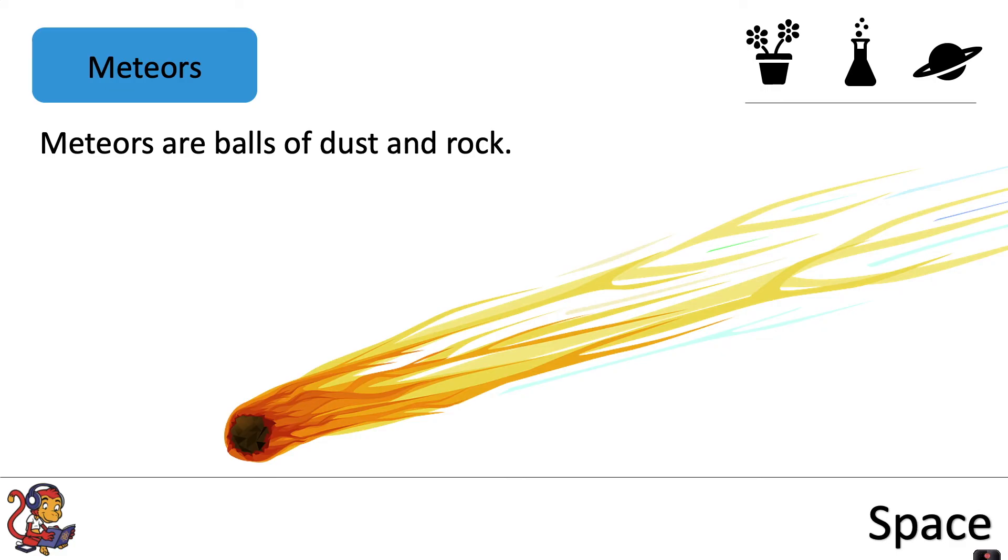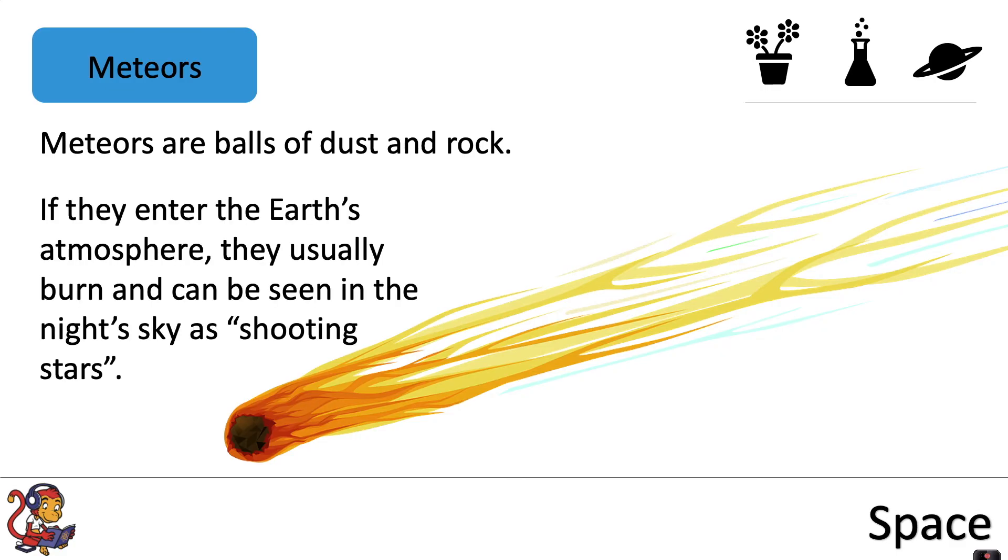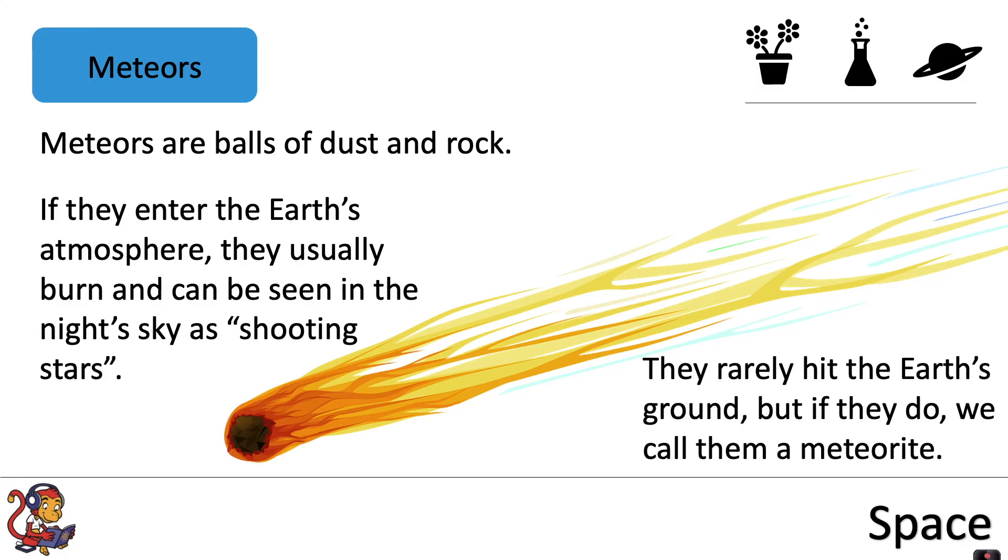Meteors are balls of dust and rock and if they enter the Earth's atmosphere, they usually burn and can be seen in the night sky as shooting stars. They normally burn up in the layer of the atmosphere called the mesosphere. They rarely hit the Earth's ground but if they do we call them a meteorite.